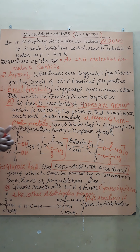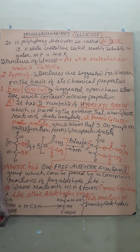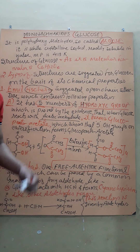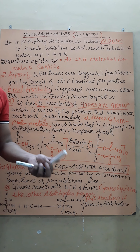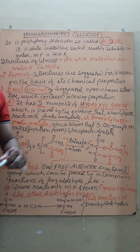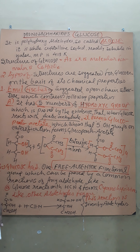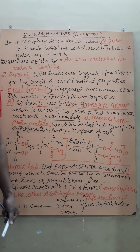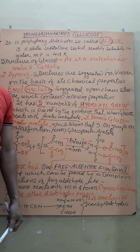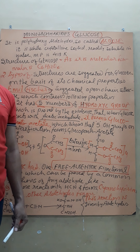The second property to prove is that glucose has one aldehyde functional group. If a compound has an aldehyde group, it must give the same reactions as simple aldehydes. From the previous chapter, we know aldehydes give nucleophilic addition reactions and also reduce Tollens' reagent, Fehling's solution, and bromine water.